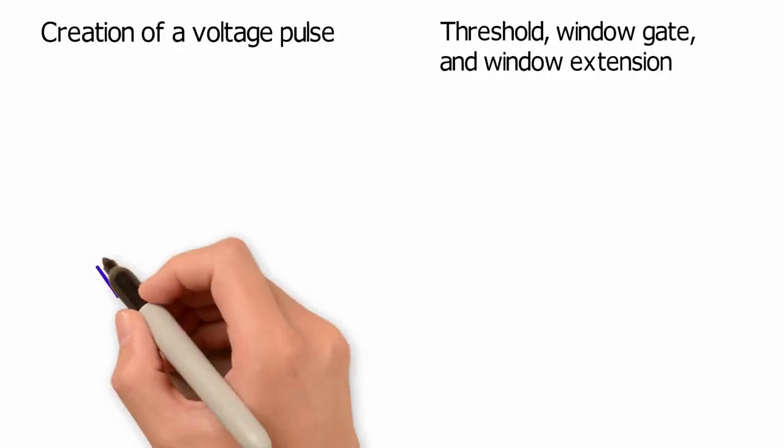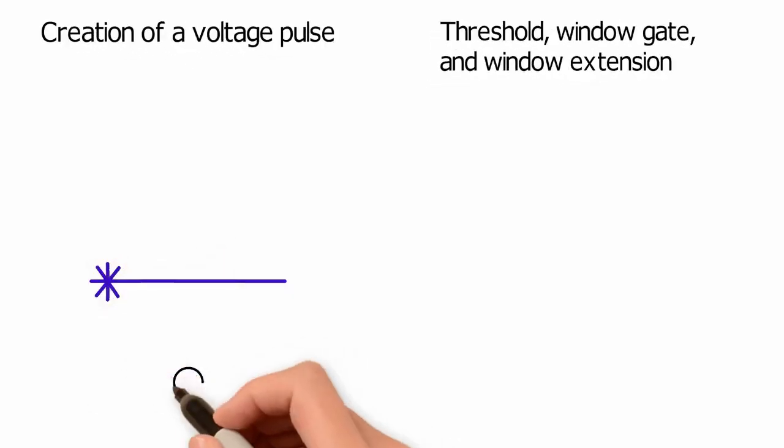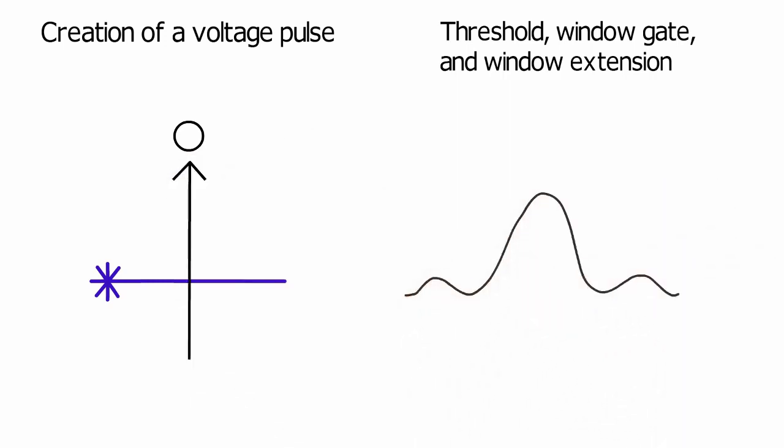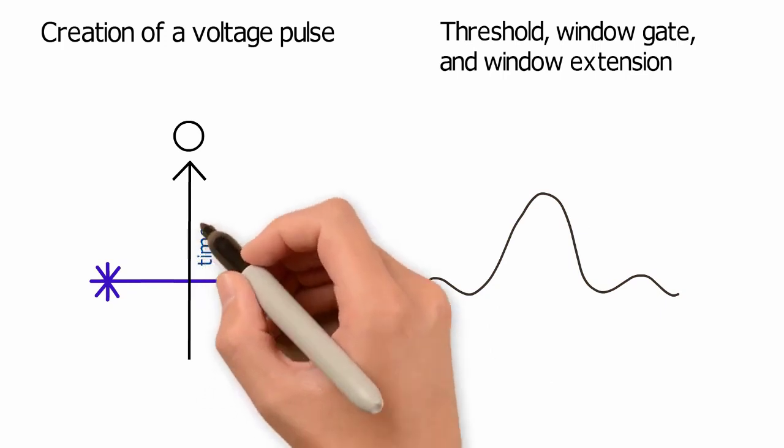The creation of a voltage pulse starts in the flow cell, at the point where the laser intercepts the cell or particle. As this particle passes through the laser, a signal is created. This signal over time is described as a voltage pulse.